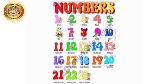Did you like the song, children? Very good. So students, let's revise the numbers once again. Let's start: 1, 2, 3, 4, 5, 6, 7, 8, 9, 10, 11, 12, 13, 14, 15, 16, 17, 18, 19, 20, 21, 22, and 23. Understood, children? Very good.